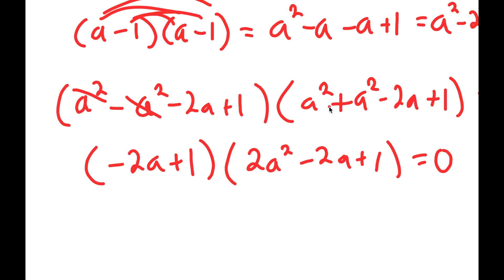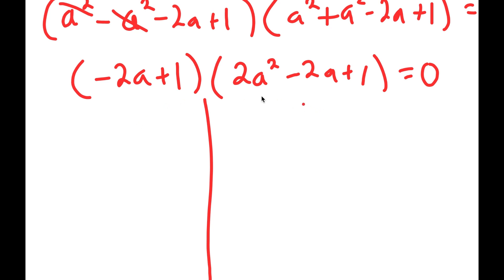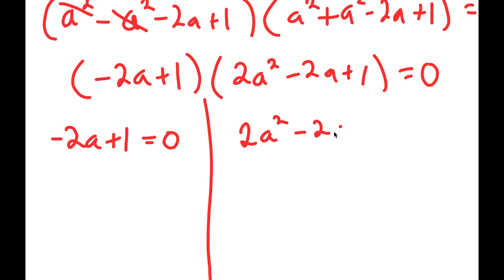From here, I'm going to divide this into two different equations. My first equation is negative 2a plus 1 is equal to 0, and my second equation is 2a squared minus 2a plus 1 is equal to 0. Because just one of these needs to be equal to 0 for the entire equation to be equal to 0.